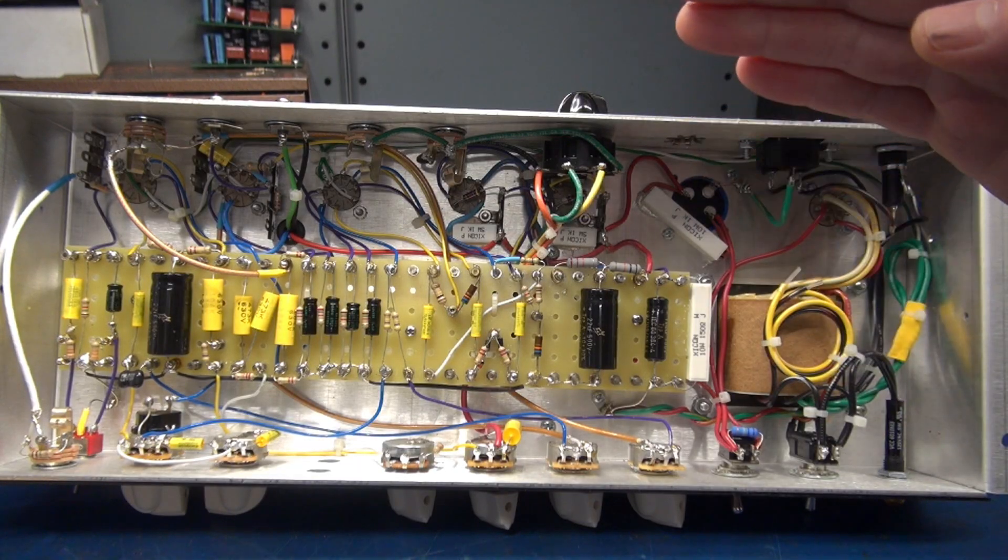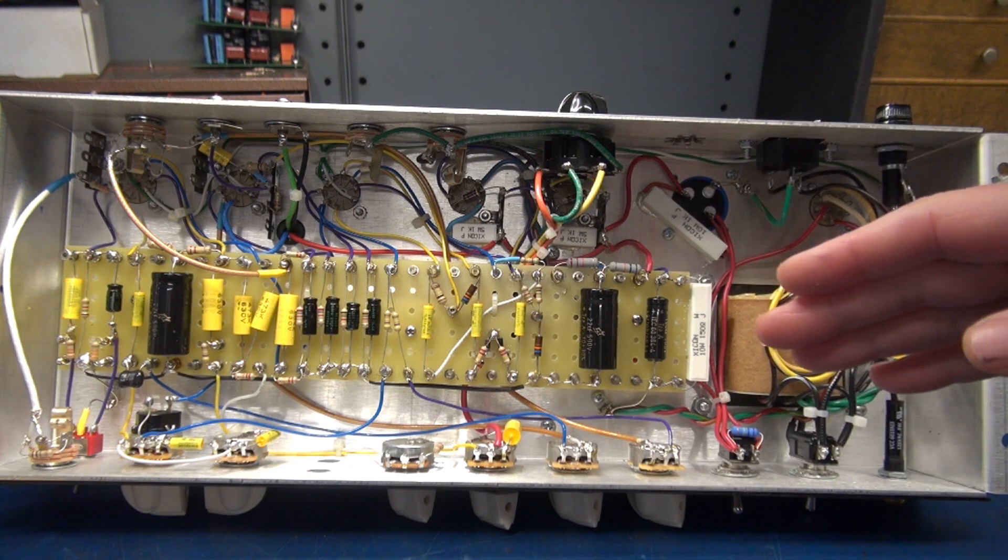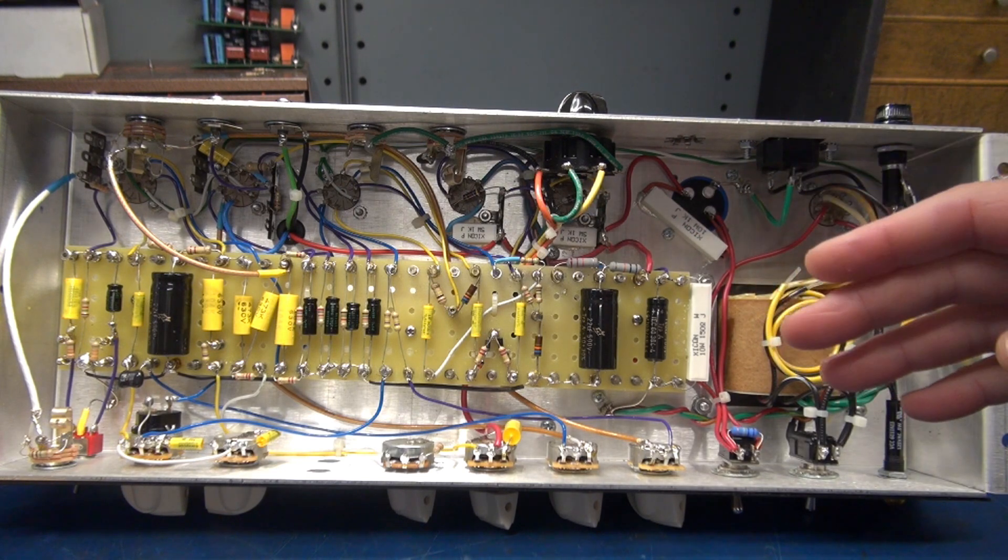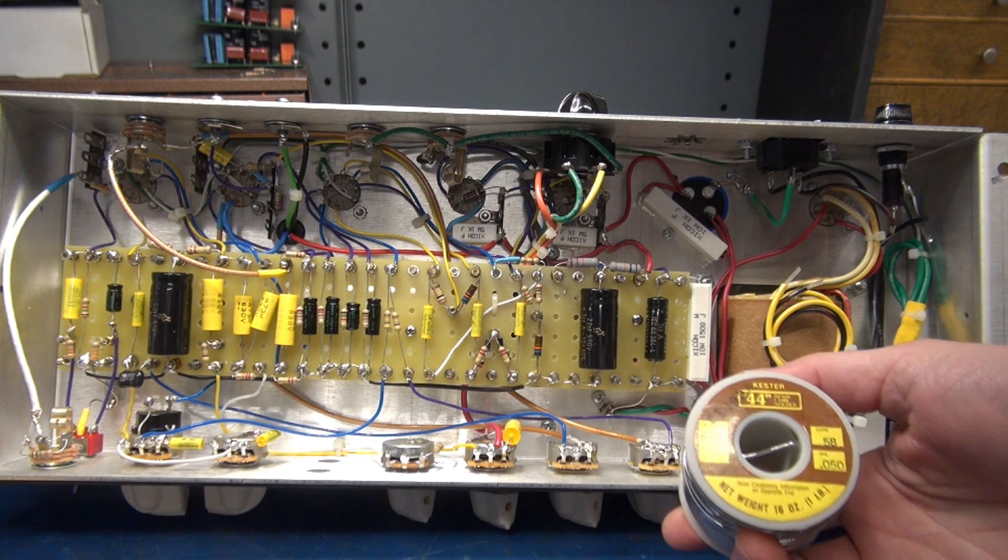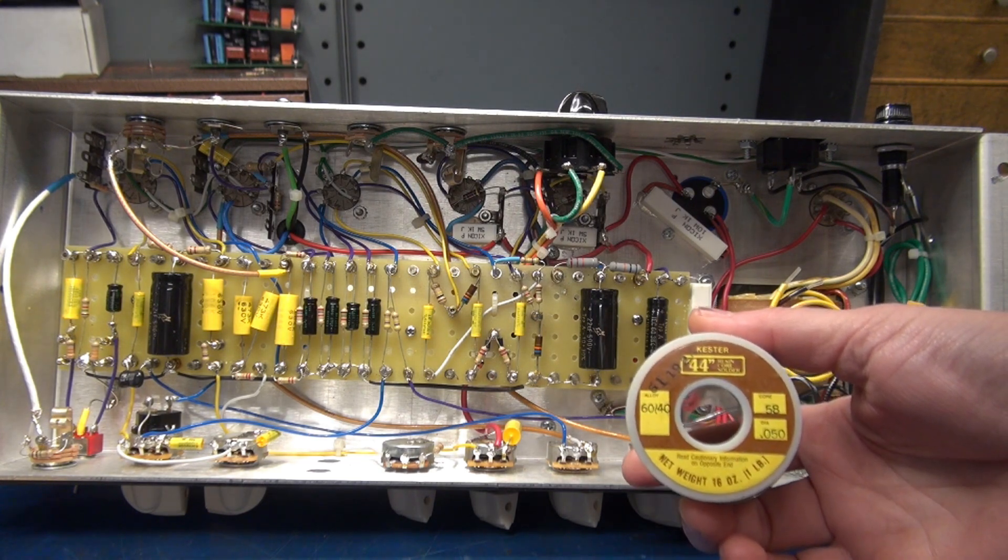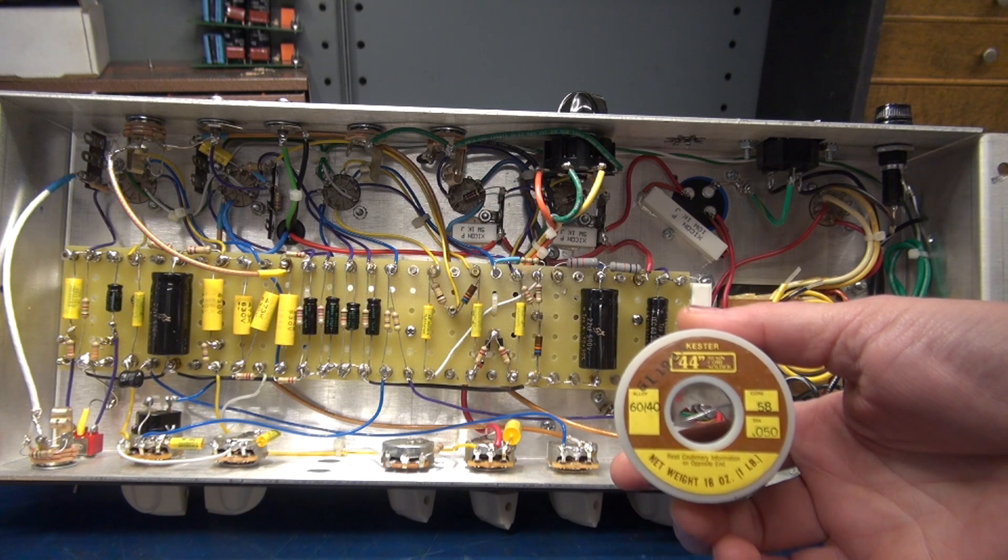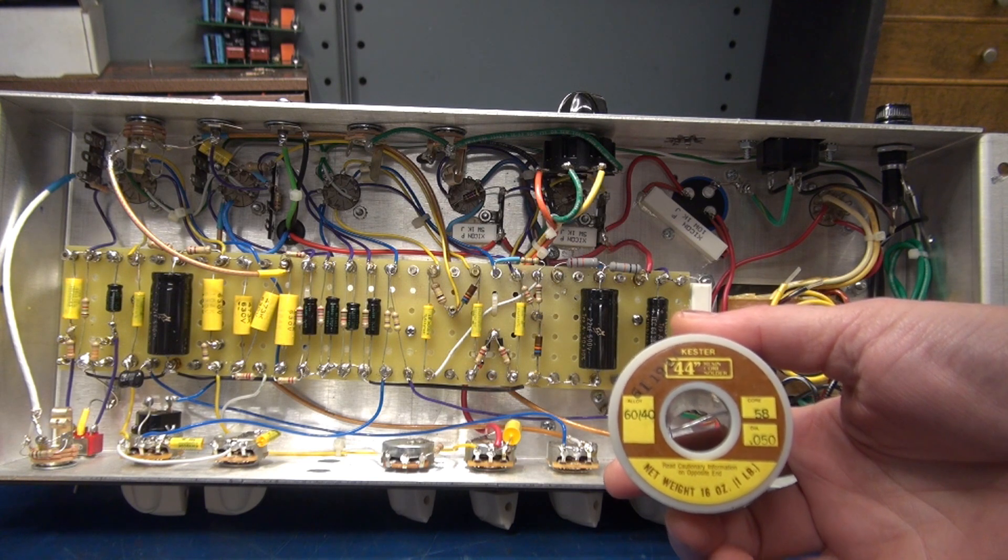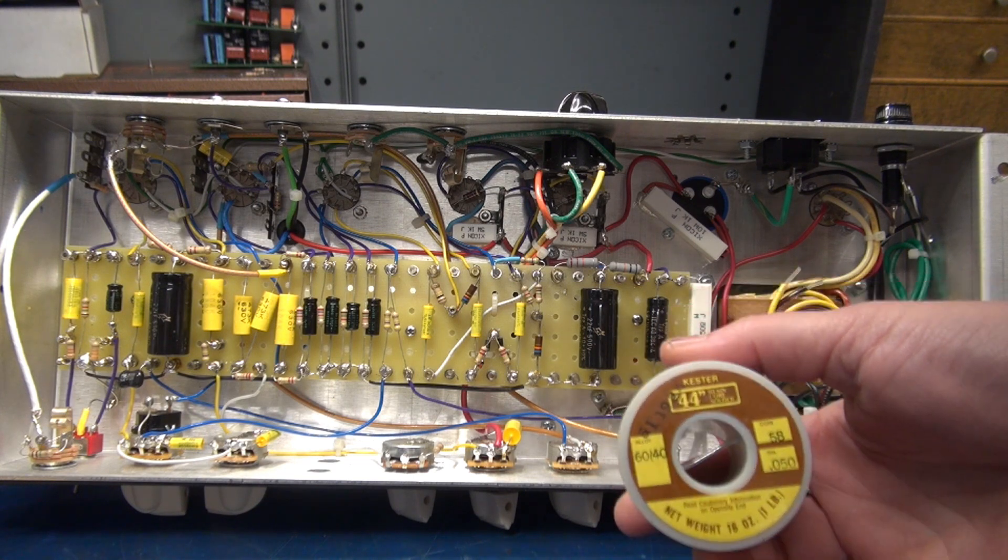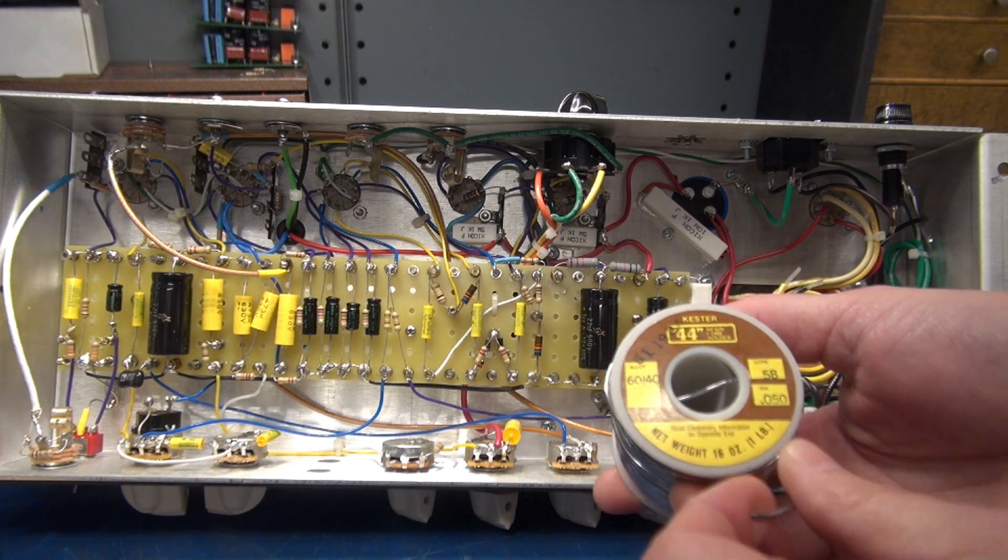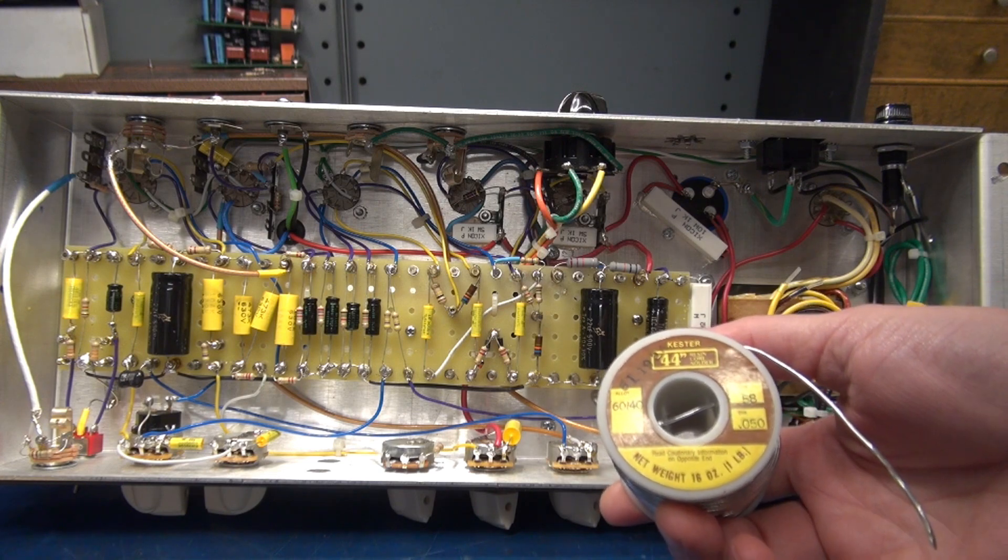So this turret board has 60 terminals, so the reflow process is going to take quite some time. But if you find yourself in this situation, I'd highly suggest that you use this solder. This is vintage Kester solder. It's the real stuff with lead and good rosin. The diameter is 50 thousandths.